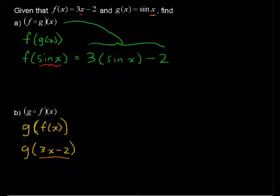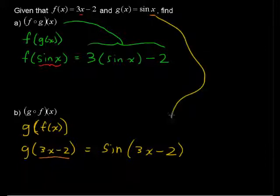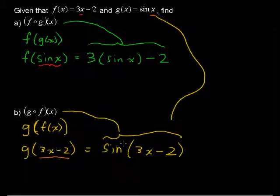So g of 3x minus 2 equals sine of 3x minus 2. I've just substituted. Instead of writing x, I've written 3x minus 2. So this sine of 3x minus 2 is the composition of functions g and f. So there's a couple examples of the composition of functions.